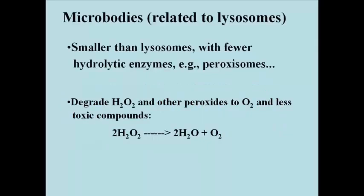The other organelles that arise from RER and Golgi vesicles, and that contain packaged proteins, are collectively called microbodies. These are smaller than lysosomes usually, and contain fewer different hydrolytic enzymes.